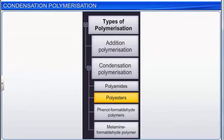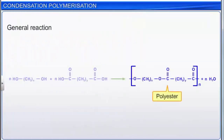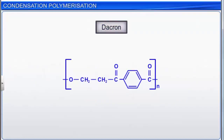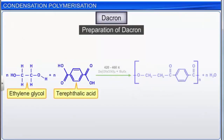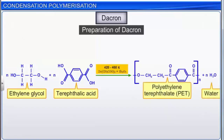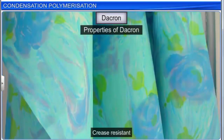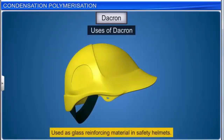Polyesters are another important group of condensation polymers. The general reaction to obtain a polyester is a condensation reaction between a dicarboxylic acid and a diol. Dacron is the trade name for polyethylene terephthalate (PET), a common polyester. To make Dacron, ethylene glycol and terephthalic acid are reacted at 420 to 460 Kelvin in the presence of a zinc acetate and antimony trioxide catalyst. Dacron is crease resistant, so it is often blended with cotton and/or wool. It is also used as glass reinforcing material in safety helmets.